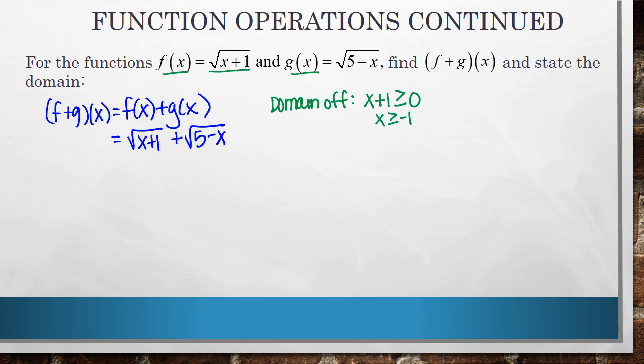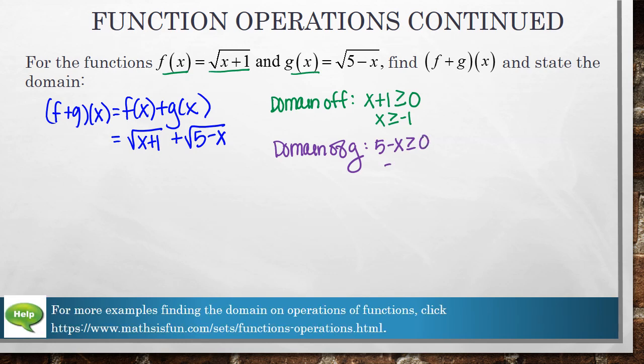For the domain of g, that's going to be again I'm looking at a square root function, so it's going to be all of the values that are going to make what's underneath that square root sign bigger than or equal to 0. So I get that x has to be bigger than or equal to negative 5.